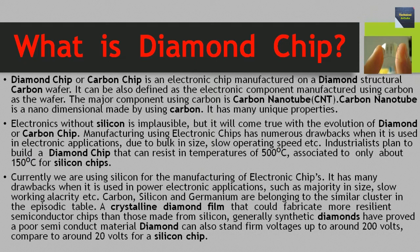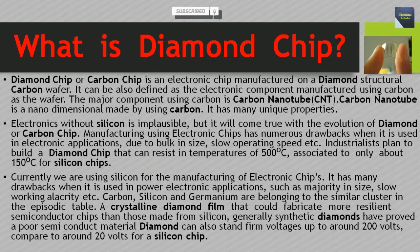Electronics without silicon is implausible, but it will come true with the evolution of diamond or carbon chip. Manufacturing electronic chips has numerous drawbacks when used in electronic applications due to bulk in size, slow operating speed, etc. Industrialists plan to build a diamond chip that can resist temperatures of 500 degrees centigrade, compared to only about 150 degrees centigrade for silicon chips. Currently we are using silicon for the manufacturing of electronic chips.